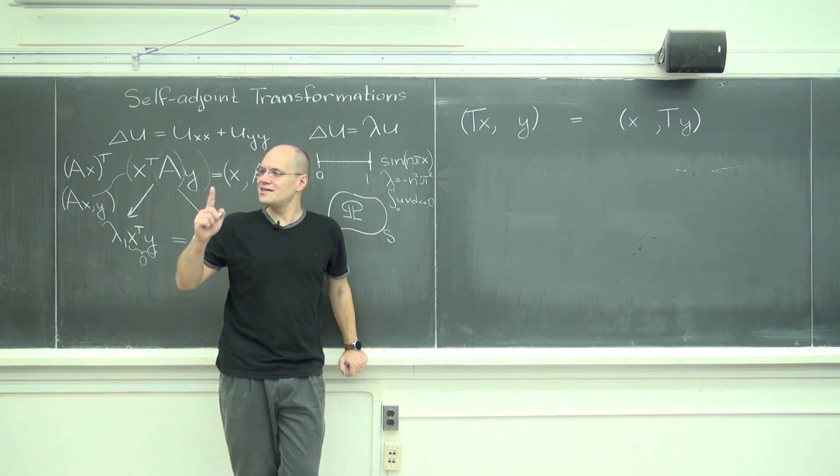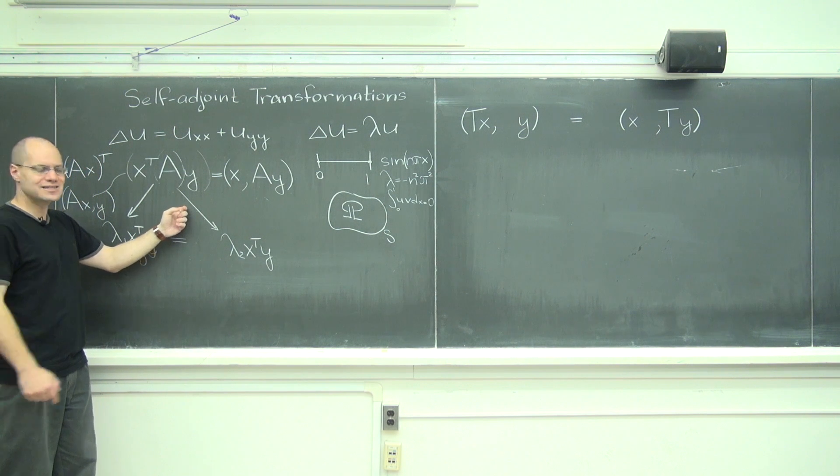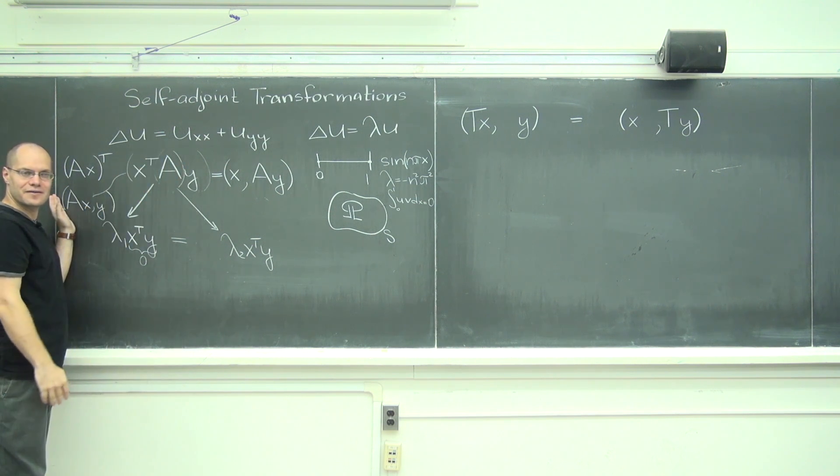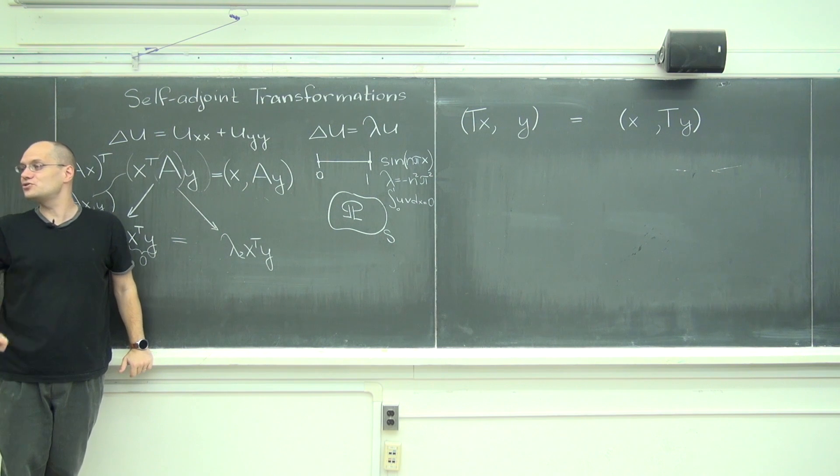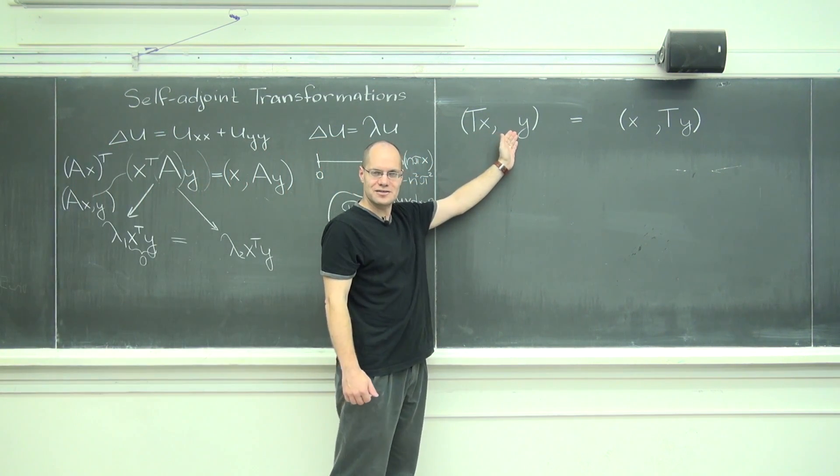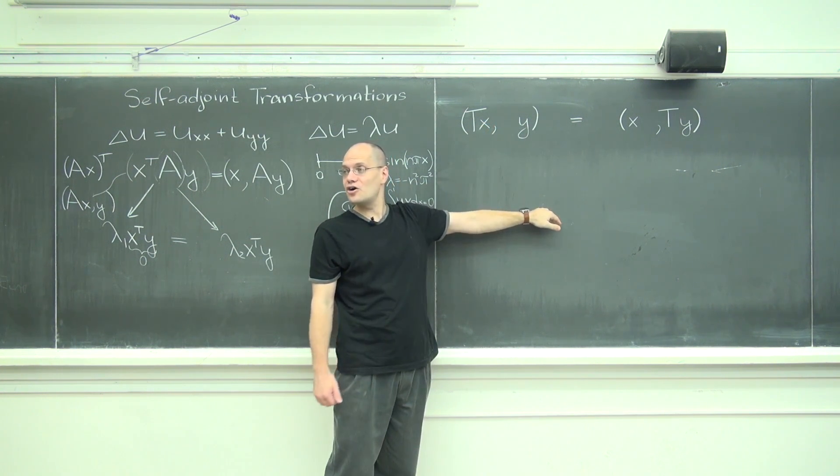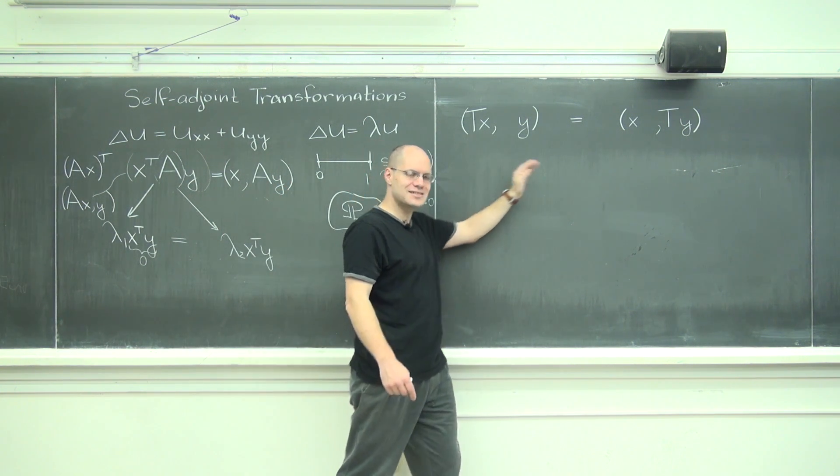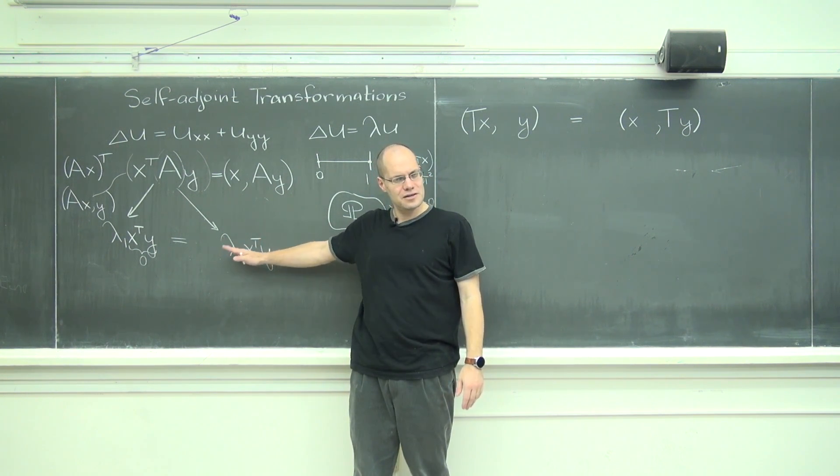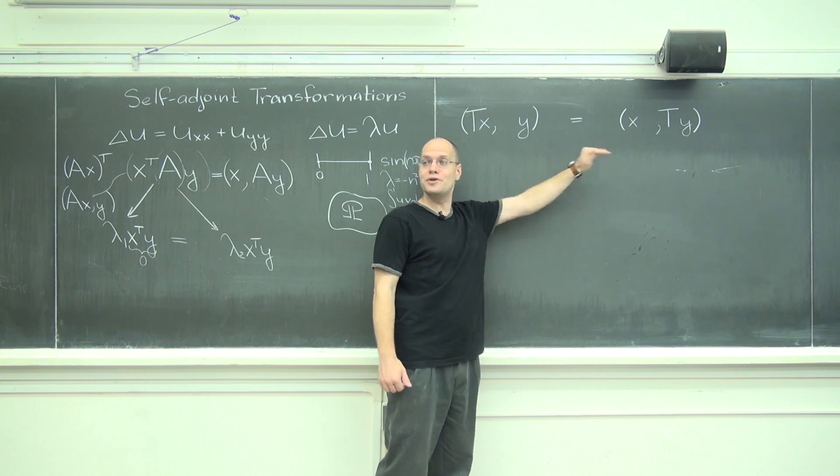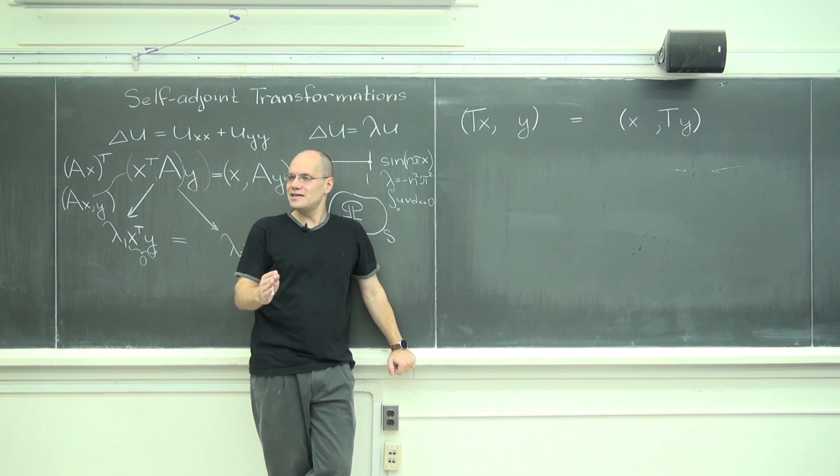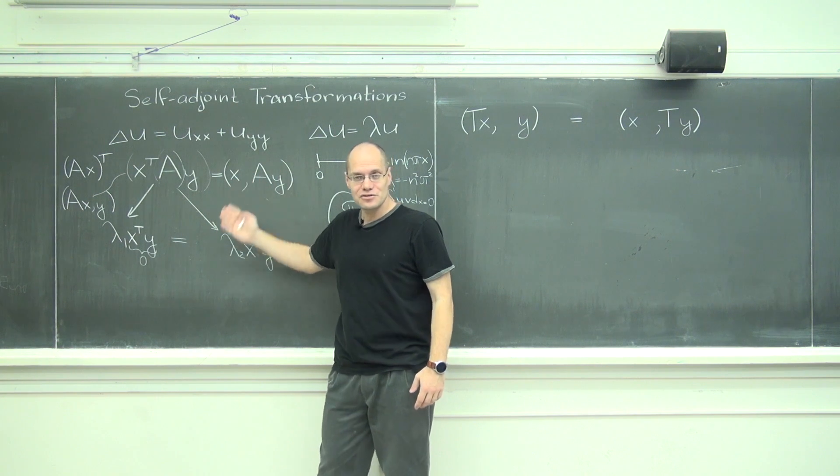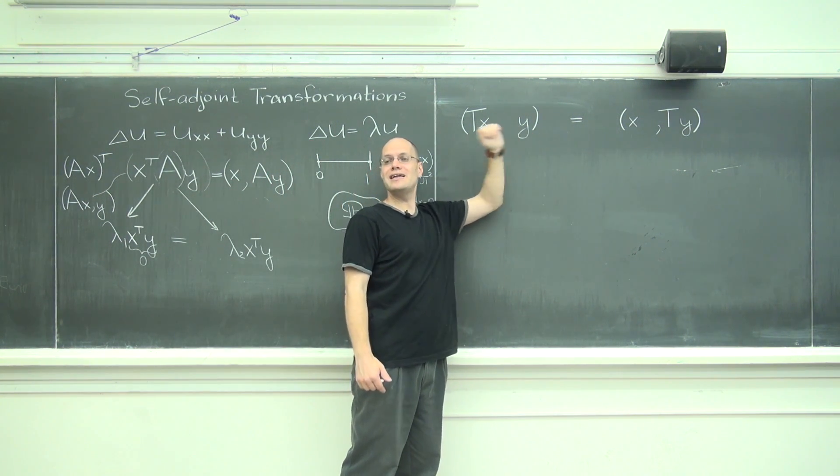And then by using the exact same argument as we did here, except instead of saying x transpose A y, you say the inner product of A x and y or T x and y, you can use the exact same argument—I'm not even going to repeat it—to show that if a matrix is self-adjoint, then its eigenvectors are orthogonal to each other with respect to that same inner product. You can see it, I'm not going to repeat it. And you can use the same argument that we'll use in a little while when we do complex numbers to show that all of its eigenvalues are real. And that's the beauty of linear algebra: you notice something in one particular vector space, in this case R^n, and you're just using the inner product, you generalize it to any vector space at all.